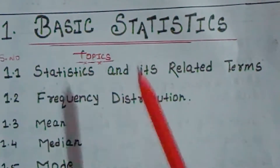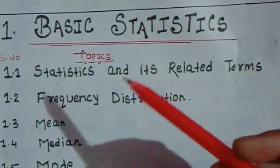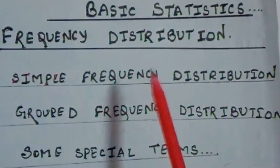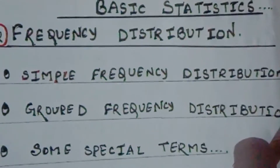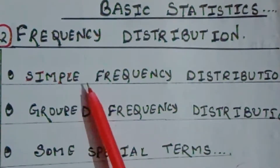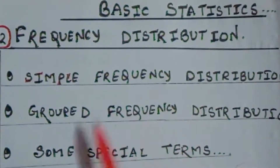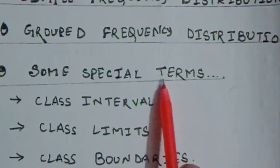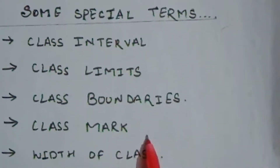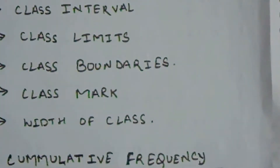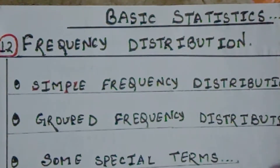Before moving to the topic, let's have an analysis of the sub-topics we are going to discuss in this video on frequency distribution 1.2. I recommend you all to go and watch my previous video first to get the concepts clear. Here we will discuss simple frequency distribution, then grouped frequency distribution, then important terms like class interval, class limits, class boundaries, class mark, width of the class, and finally cumulative frequency. Without wasting time, let's proceed.